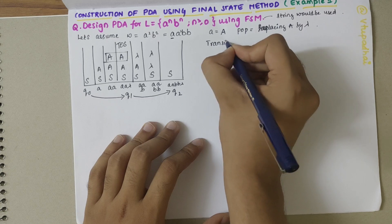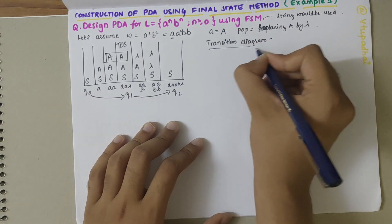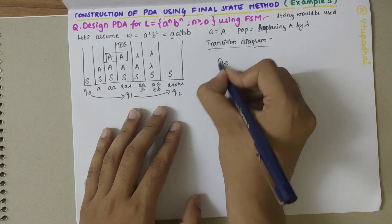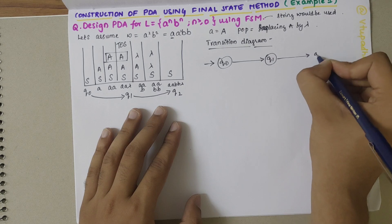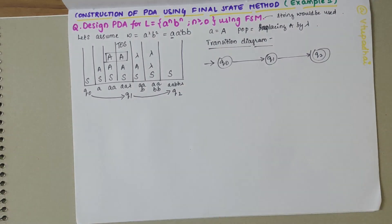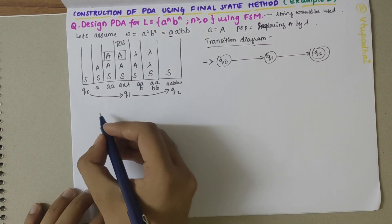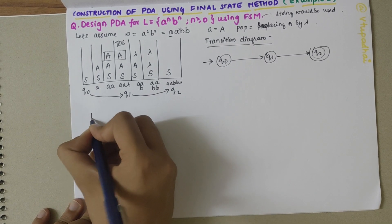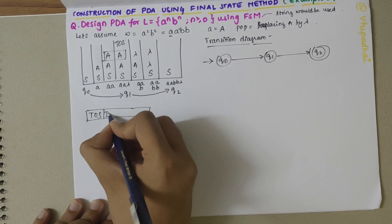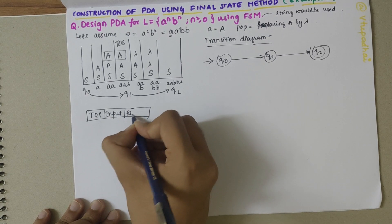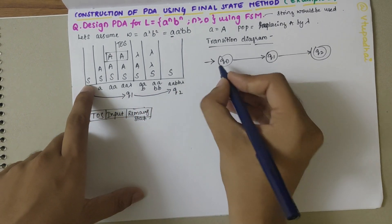Now that we're done with the stack, our next step is to draw the transition diagram. I have three states: q0 being the start state, then q1, and q2 being the final state. In order to write the transitions, the format is: what is on top of stack, what the input is, and whatever remaining contents are on the stack.